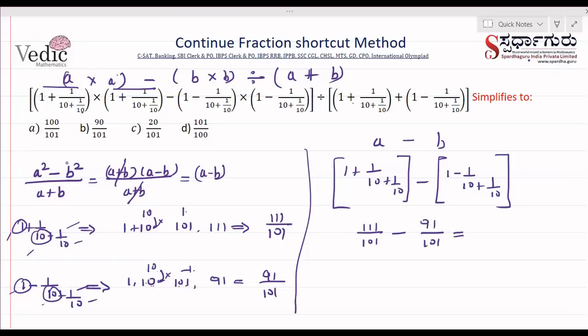The value of a is 111/101 and the value of b is 91/101. Since the denominators are the same, we directly subtract the numerators: 111 minus 91 is 20. So our final answer is 20 by 101. This is the way to find the answer — I hope you got it.